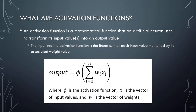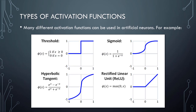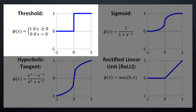Many different activation functions can be used in an artificial neuron, and each behaves differently with respect to the way it transforms its input value into an output value. Let's consider four of the most common types. First is the threshold activation function, which returns one of just two possible values: 0 or 1. When the value passed in is greater than or equal to 0, the function returns 1; otherwise it returns 0. The output values for artificial neurons that use a threshold activation function will therefore always be 0 or 1.